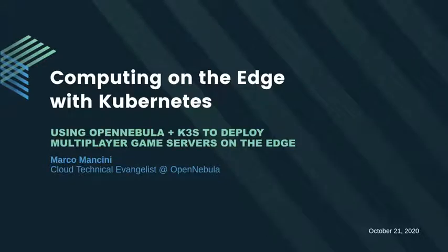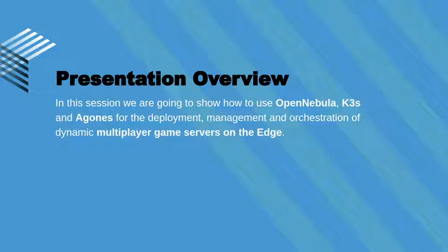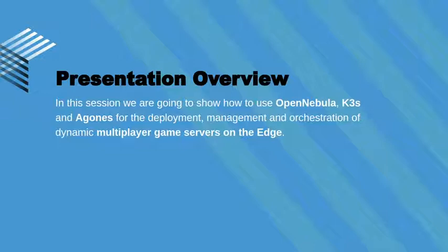Hi all, my name is Marco Mancini and I am a cloud technical evangelist at OpenNebula. I would like to thank the organizers for this opportunity. Today I will speak about provisioning and managing infrastructure resources to deploy multiplayer game servers on the edge. In order to satisfy latency requirements for multiplayer games, it is necessary to deploy game servers that are geographically in close proximity to the gamers. We will look at OpenNebula edge computing features and the recent integration of Firecracker and Docker Hub for orchestrating containers. We are going to deploy and manage Kubernetes clusters based on K3S, the lightweight distribution built for IoT and edge by Rancher, and on top of that Kubernetes cluster on the edge, we can deploy the Agones open source platform for multiplayer games and game servers.